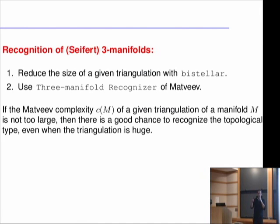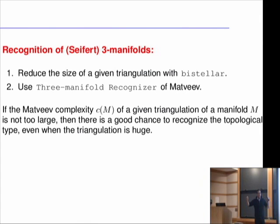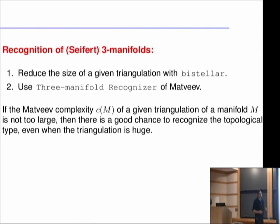This is correct — this is a theorem by Pachner: whenever two triangulations of a manifold, of whatever dimension, are PL homeomorphic, they are connected by a sequence of bistellar flips. But finding the sequence on a computer might be very hard. In particular you might need to add many vertices, so recognition is not guaranteed — but they are connected. Surprisingly, in practice it works.